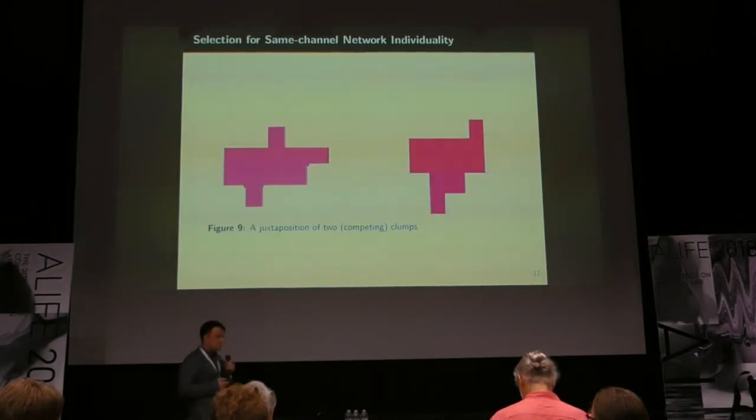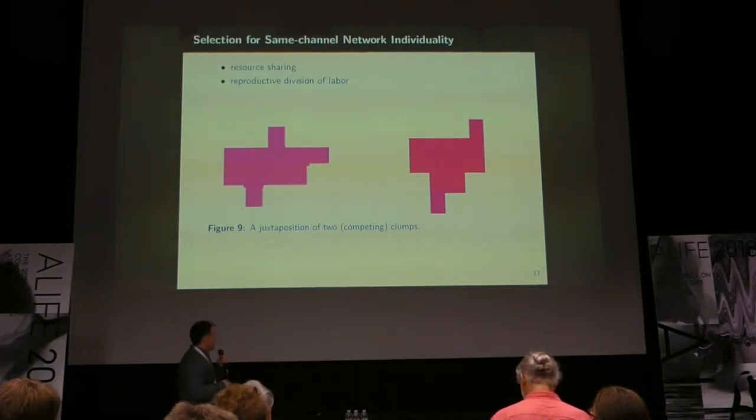It's a coordination task, and they need to find this Goldilocks zone where their same channel signaling network is large enough that they can collect a lot of resources, but not too large that they're having erroneous activation. We have this interesting coordination task, but where does the transition of individuality occur, or why do we expect one to occur here? The key points that we're looking for transitions of individuality is resource sharing and reproductive division of labor.